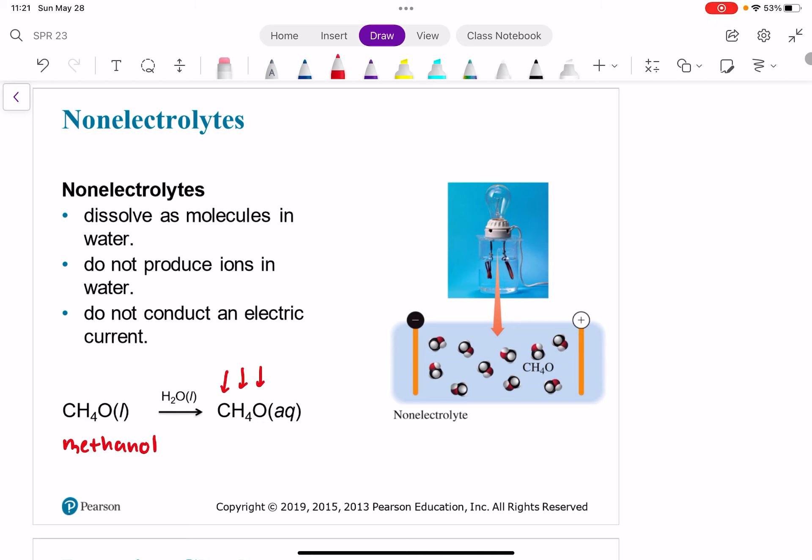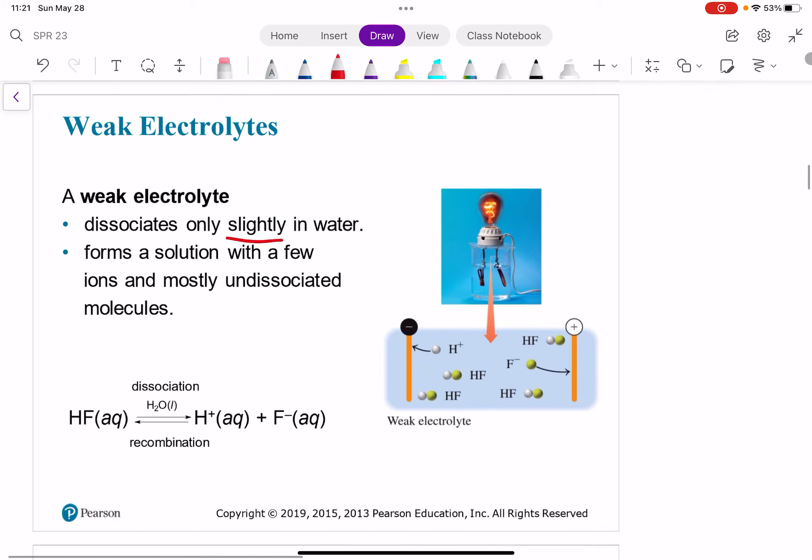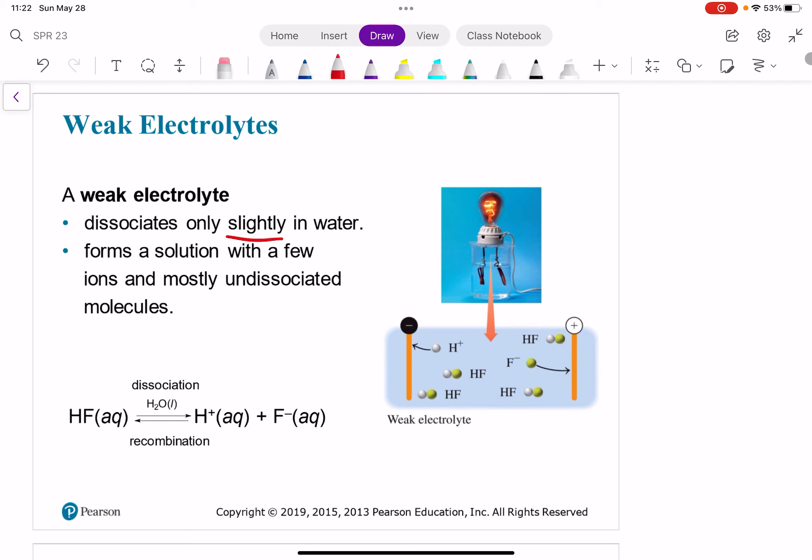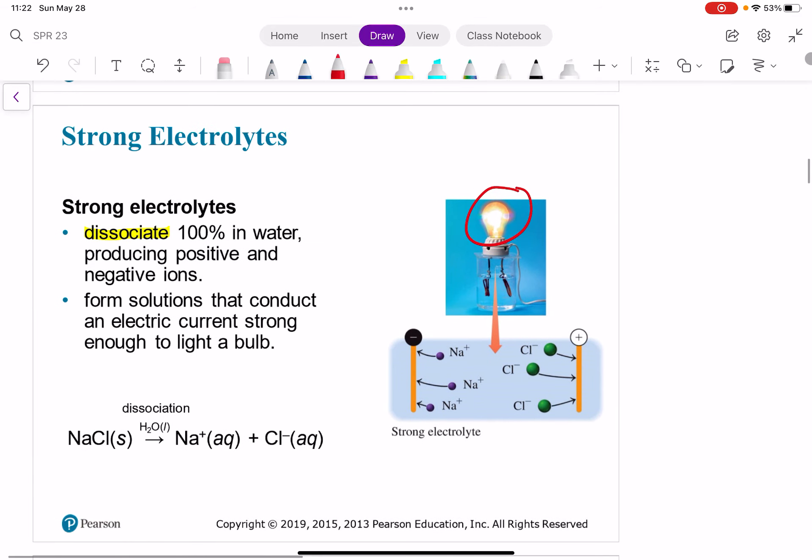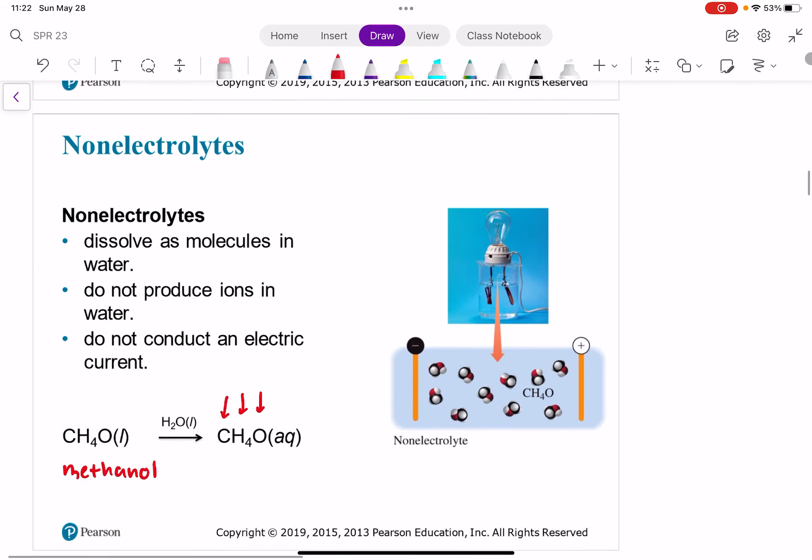So it just stays as a molecule in water. And the reason for that is actually it's a non-electrolyte, but also it's non-polar and water is polar, right? So these non-electrolytes don't produce ions in water and they don't conduct an electric current. And that reminds me, I did want to mention, weak electrolytes do conduct an electric current, but it's lower. It's not lighting up that bulb as well as strong electrolytes.